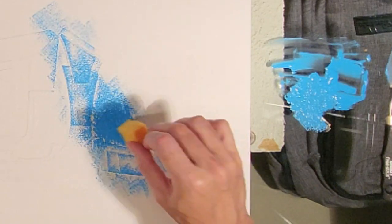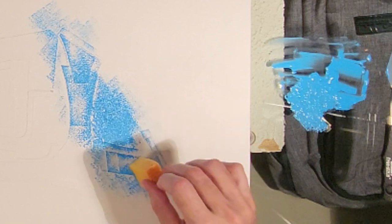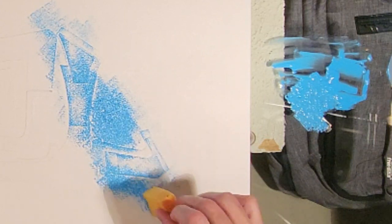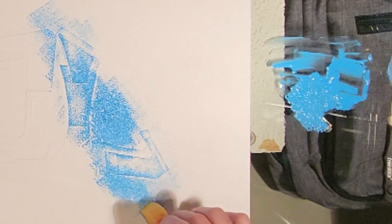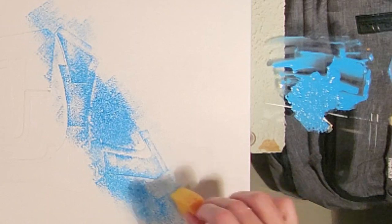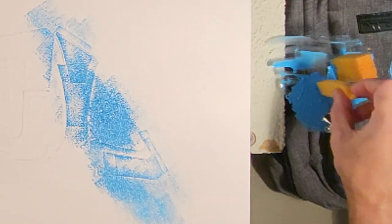And the benefit of that flat surface on the sponge is that it hits the surface of the canvas evenly and it makes the depth of that card stock. Those layers of card stock really stand out and sponges help you to blend very well. So I'll continue on.